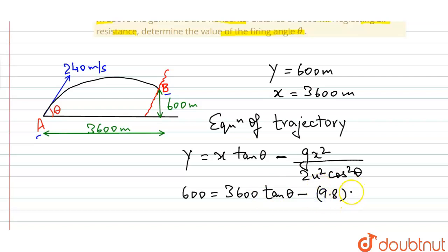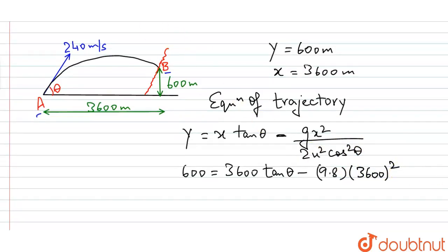We can put the value of X again, 3600 squared, over 2U squared.